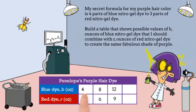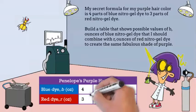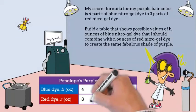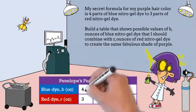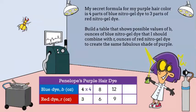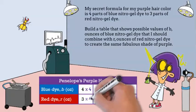Let's go one more time. Multiply the numerator and denominator by — that's right — four. Tell me what you get.